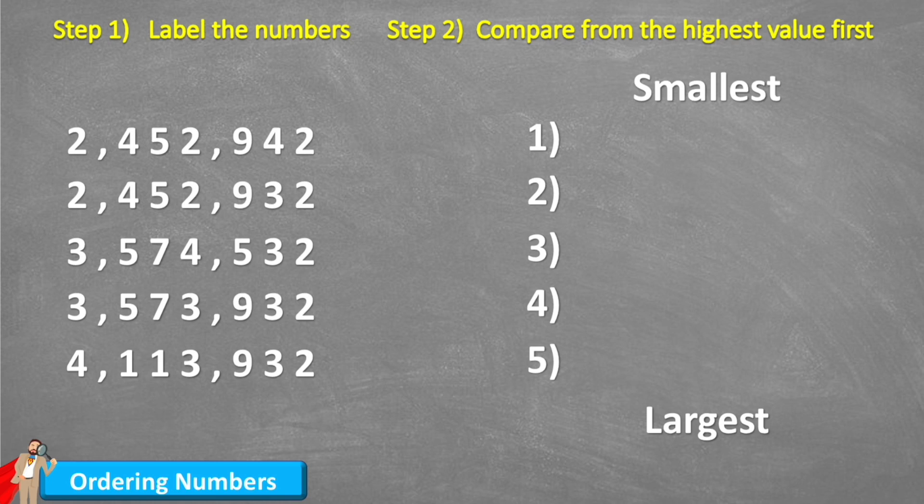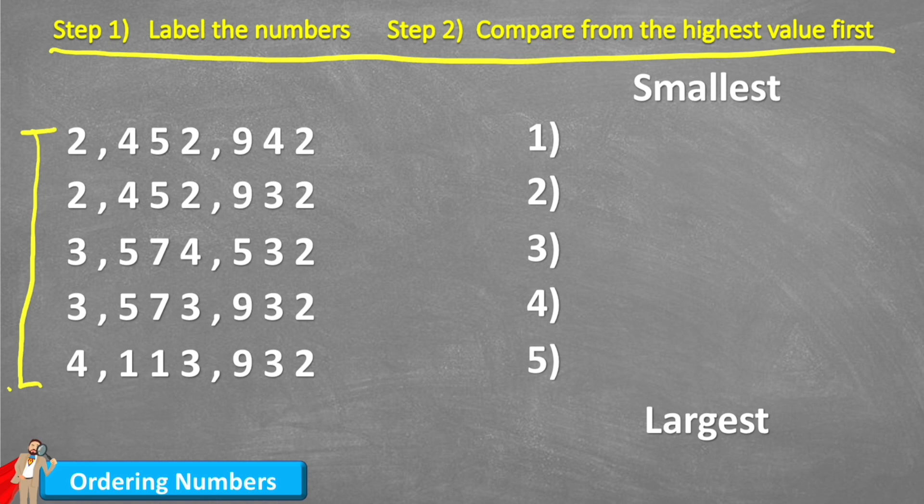Okay, so we're going to start by ordering this set of numbers here. And we're going to follow these steps that we've got written across the top. The first step says to label our numbers. And then step two says compare from the largest value first, or the highest value first.